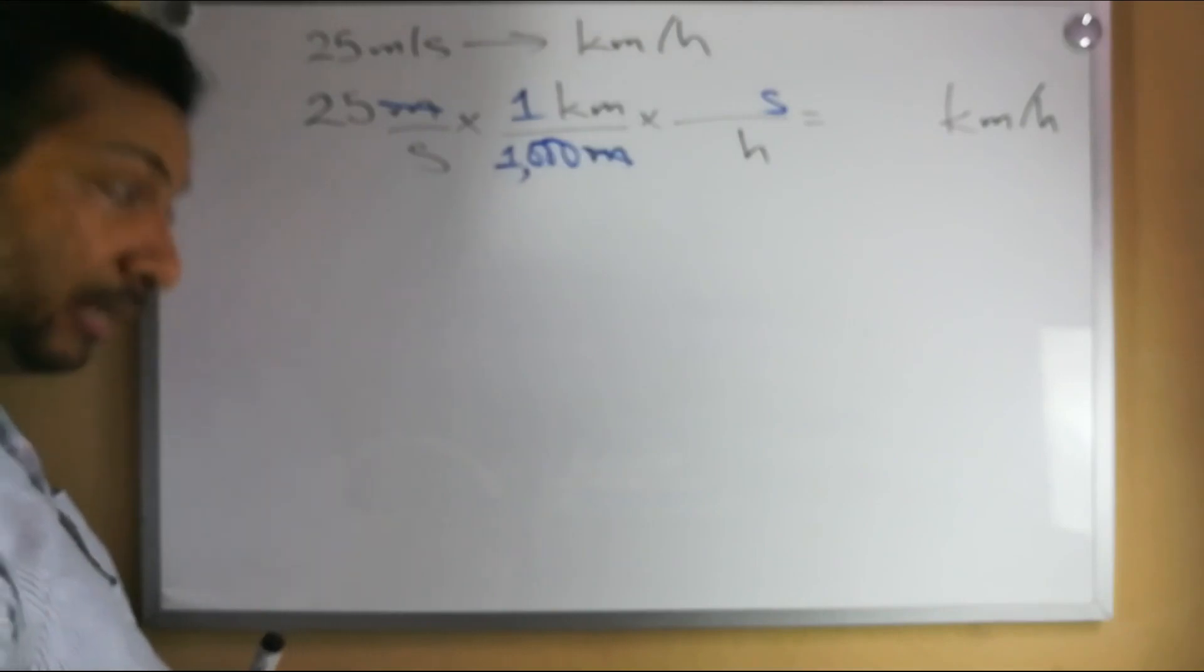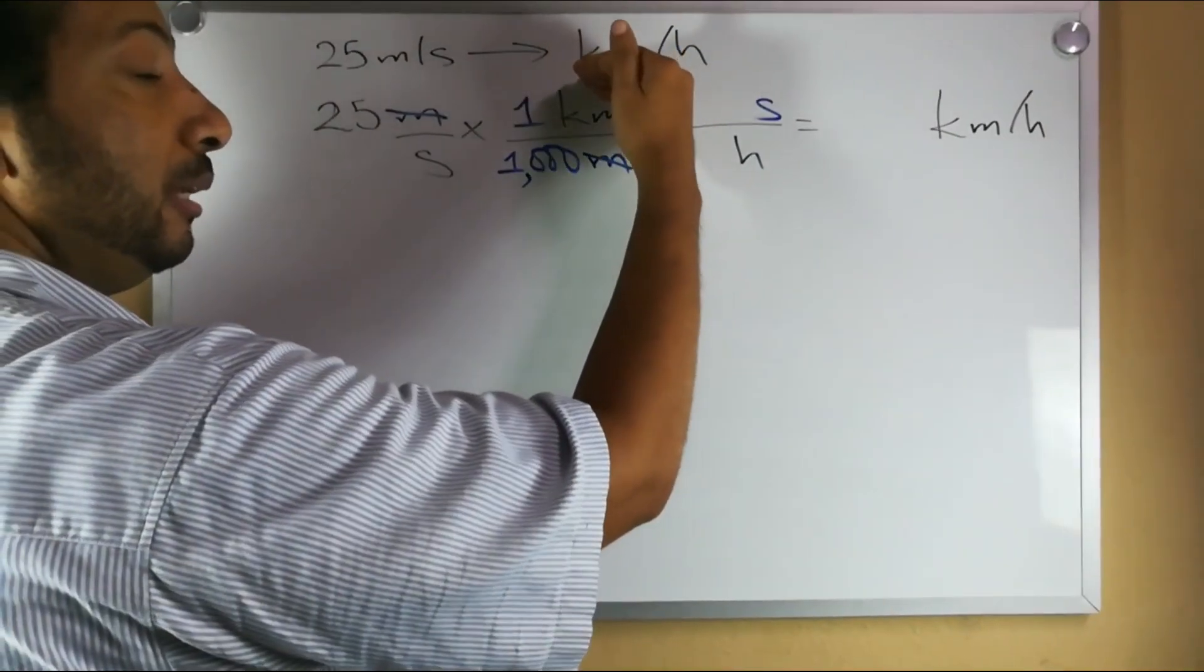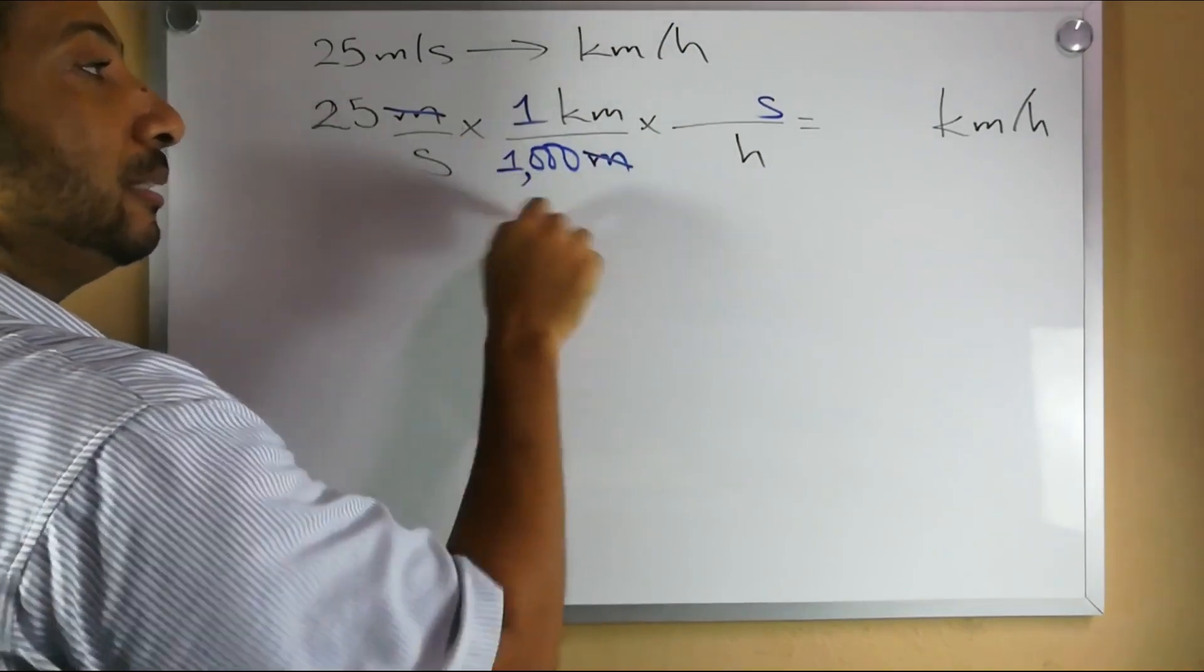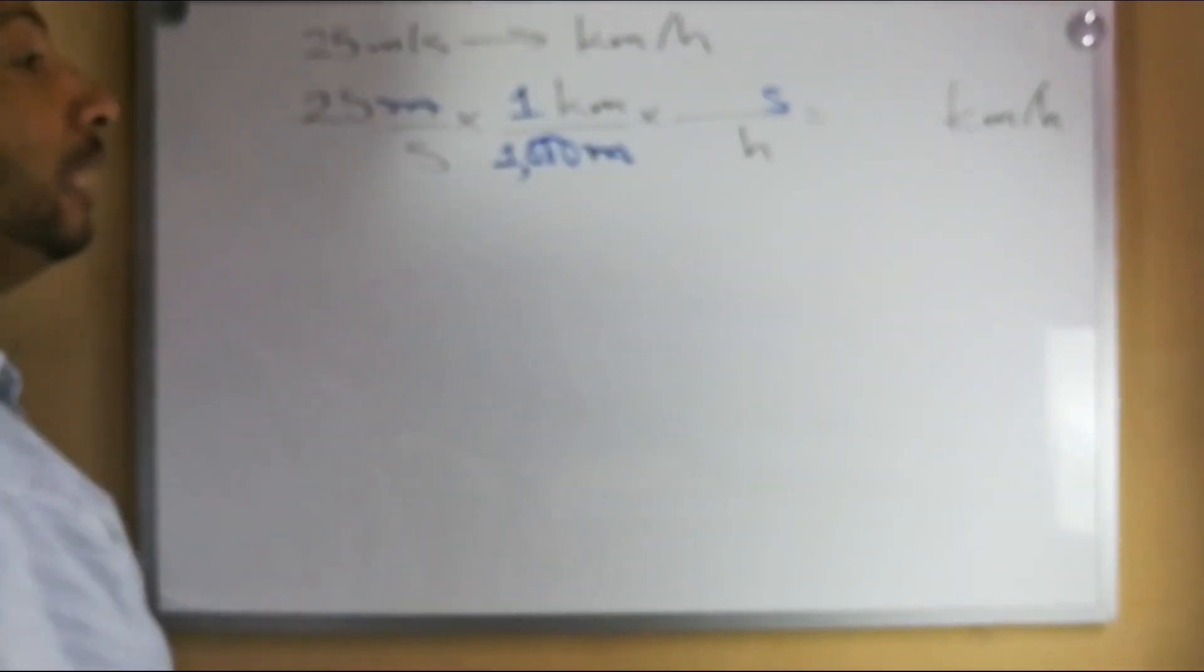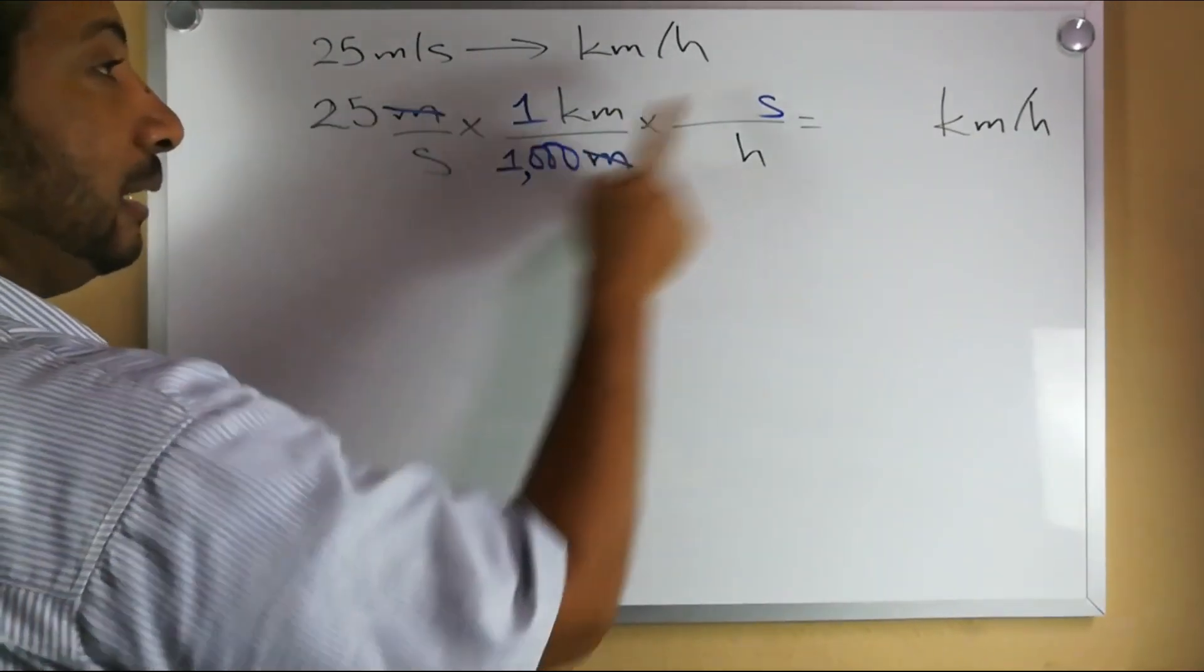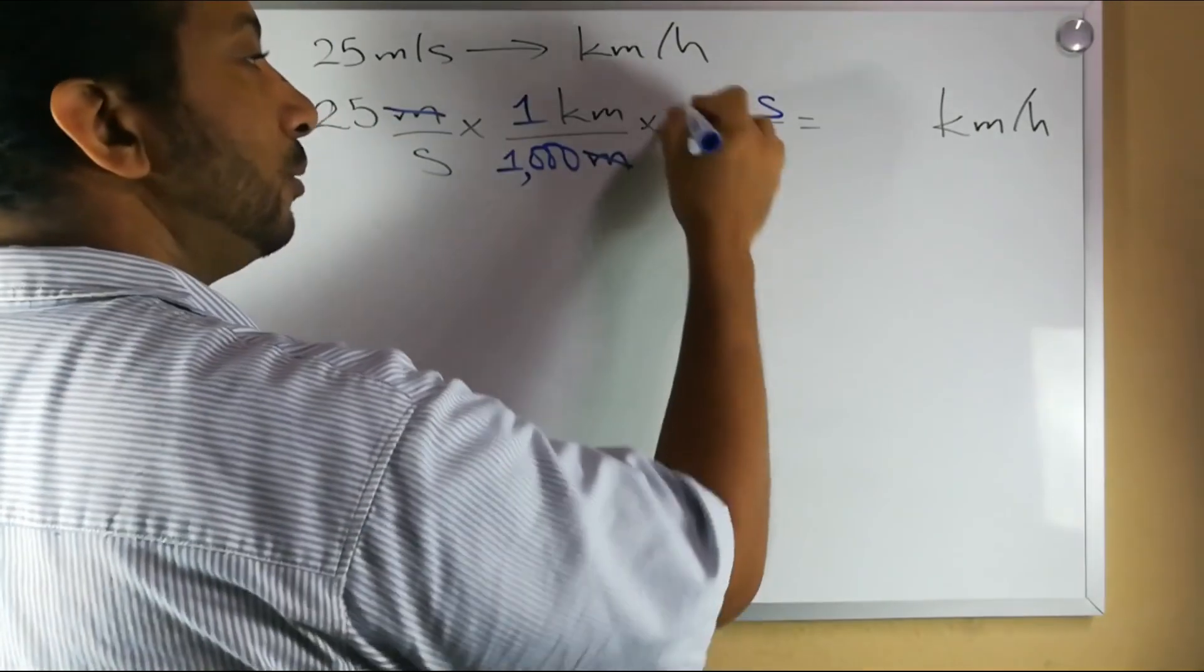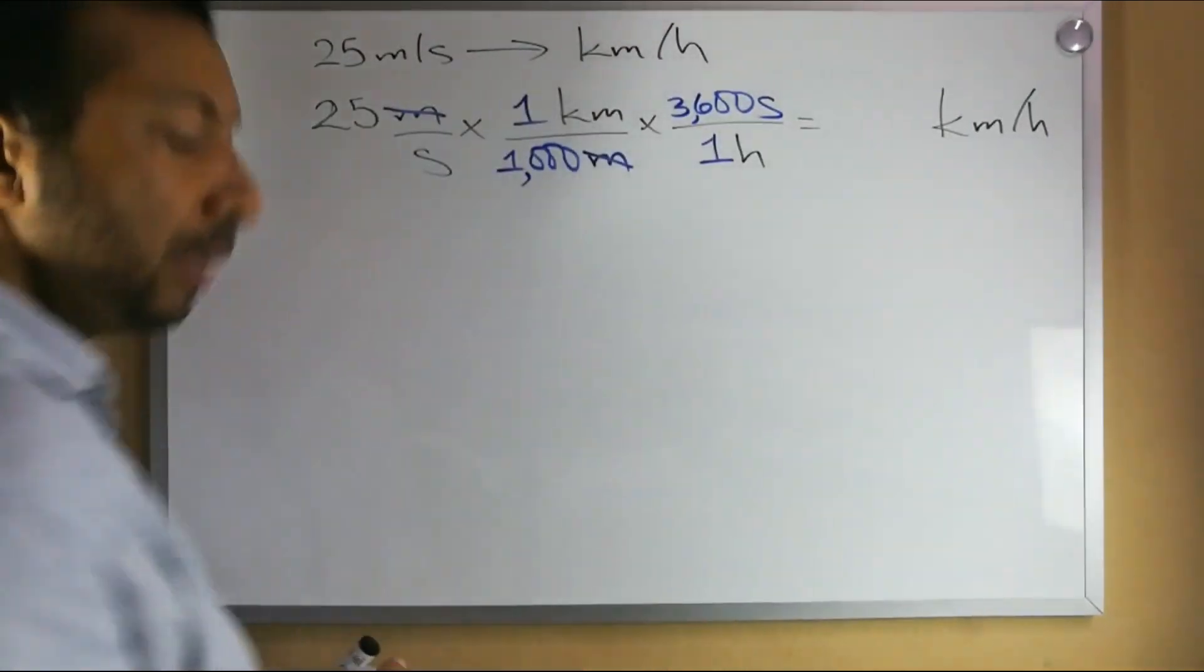That way the meters here and the meters there will cancel out, and the value hasn't changed because one kilometer is equivalent in value to 1,000 meters. So I'm just multiplying times one, I haven't changed the value of anything. Next I want the seconds to cancel out.